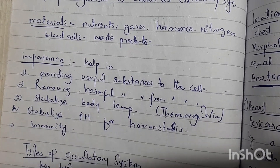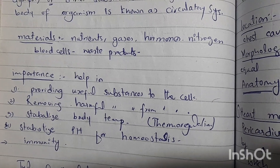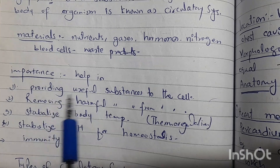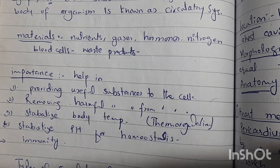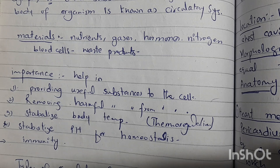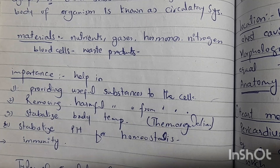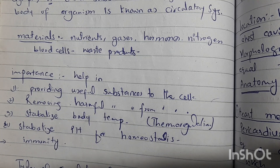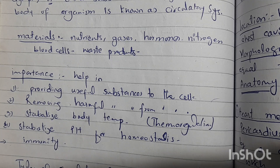Now let's look at the advantages of the circulatory system for our body. First, it provides useful substances to the cell — whatever the cell requires, such as carbohydrates and oxygen for metabolism, is supplied from the circulatory fluid. Second, it removes harmful substances from the cell: the waste or toxic material produced from the cell's metabolism is transported from the cell, added to the circulatory fluid, which is then responsible for taking it elsewhere.